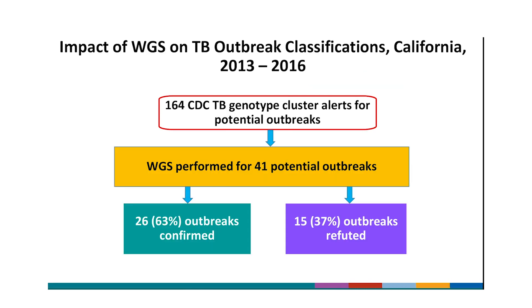This next slide shows how WGS impacted TB outbreak work at a program level. In the past four years, we received 164 CDC TB genotype cluster alerts for California. We recently analyzed data from all of our TB outbreak investigations from 2013 to 2016, for which we had WGS results. We used WGS on genotype clusters associated with 41 potential TB outbreaks. After considering WGS results, along with clinical and epi data, almost two-thirds of the clusters were confirmed as outbreaks. In many of these confirmed outbreaks, WGS helped us identify cases we could exclude from further investigation because their TB isolates were genetically distant from the outbreak case isolates and unlikely to be linked by recent transmission to the outbreak.